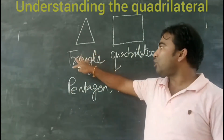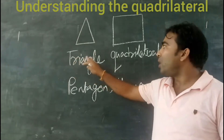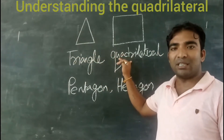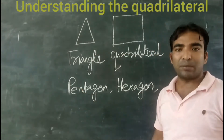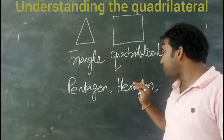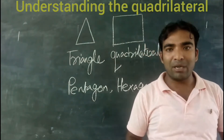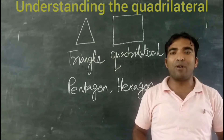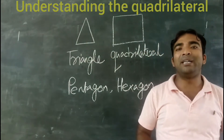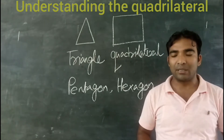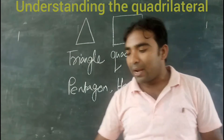To summarize: 3 sides — triangle; 4 sides — quadrilateral; 5 sides — pentagon; 6 sides — hexagon; 7 sides — heptagon; 8 sides — octagon; 9 sides — nonagon; 10 sides — decagon. This is the classification of the polygon on the basis of the number of sides.